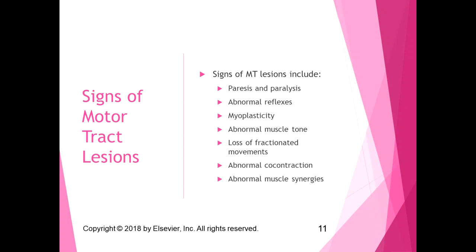When we have motor tract lesions or upper motor neuron lesions, we see different signs than with lower motor neuron lesions. Signs of motor tract lesions include paresis and paralysis, abnormal reflexes, myoplasticity, abnormal muscle tone, loss of fractionated movements — which makes sense if we lose the lateral corticospinal tract — as well as abnormal co-contraction and abnormal muscle synergies.